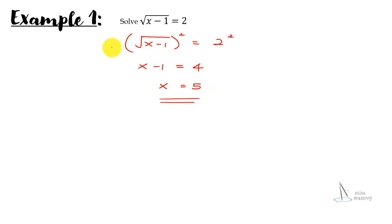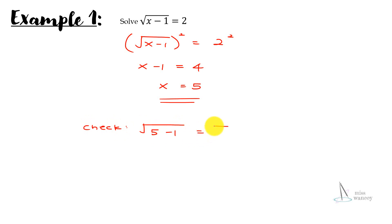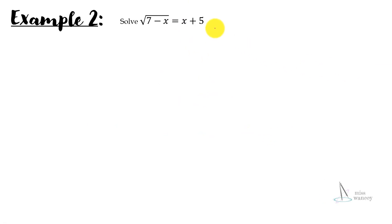You can go back and check. If we substitute 5 in, we have the square root of 5 minus 1, which is the square root of 4, and that equals 2 — which matches the right-hand side. So x = 5 is correct. Next, solve the square root of 7 minus x equal to x plus 5.